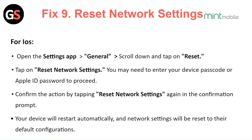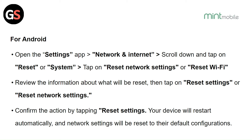Fix 9: Reset the network settings. For iOS: open Settings, then General, scroll down and tap Reset, then tap Reset Network Settings. You may need to enter your device passcode or Apple ID password. Confirm by tapping Reset Network Settings again — your device will restart and network settings will be reset to default. For Android: open Settings, then Network and Internet, scroll down and tap Reset or System, tap Reset Network Settings or Reset Wi-Fi, review the information, then tap Reset Settings and confirm — your device will restart and network settings will be reset to default.